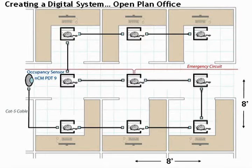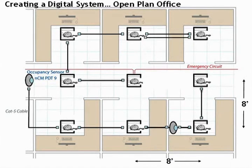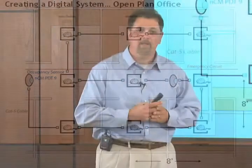So for example, if we decide that one occupancy sensor is not going to be sufficient, it's as simple as breaking our connection here, adding an occupancy sensor, installing it, connecting everything up, and we're off and running.